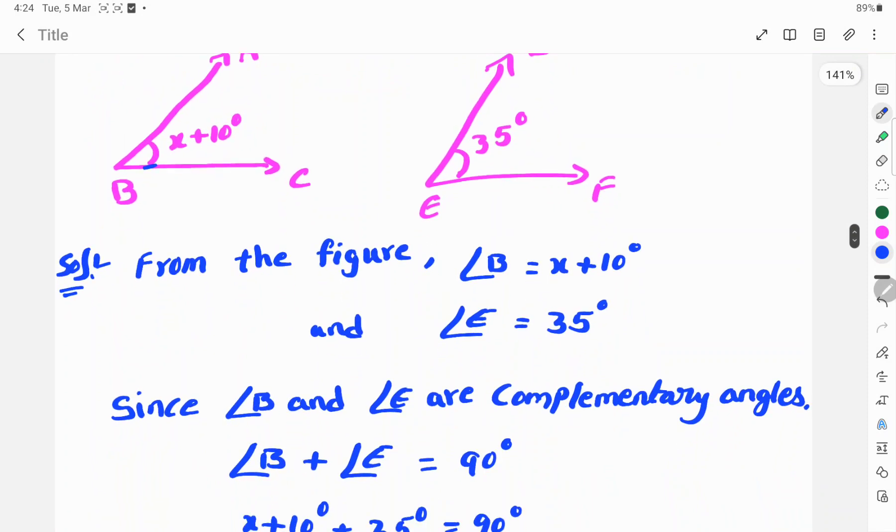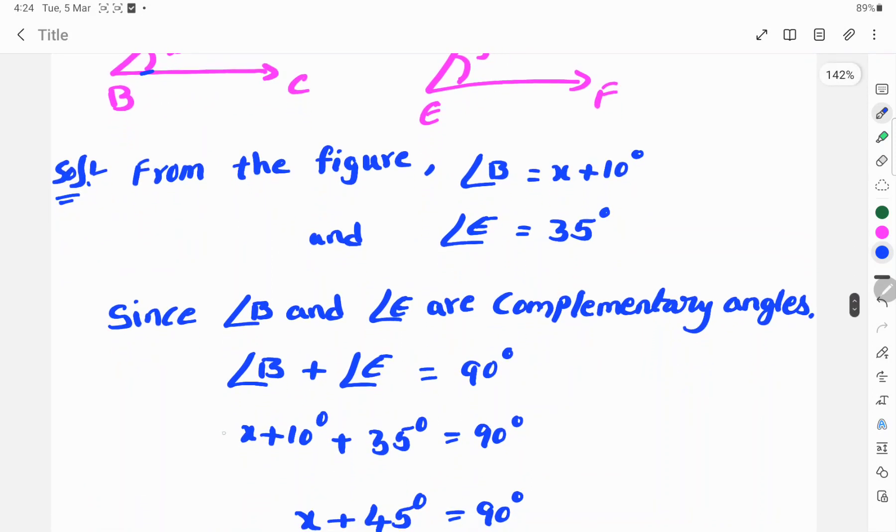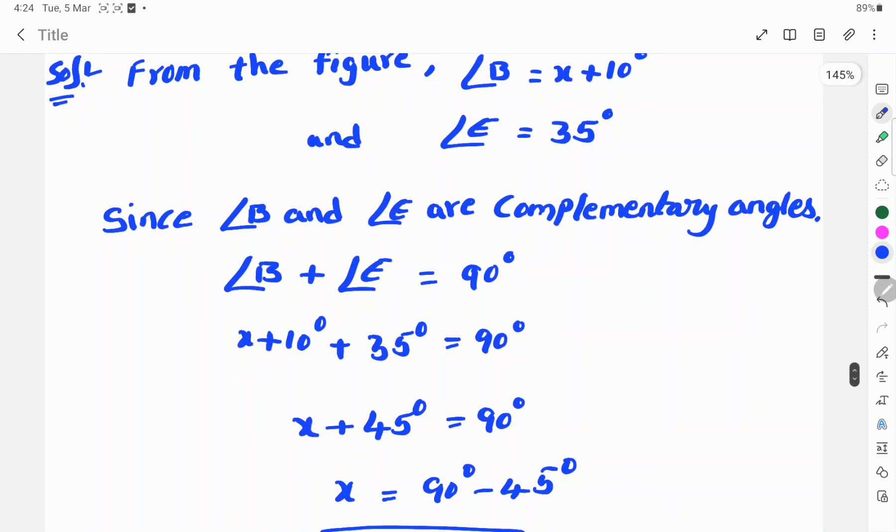Since angle B and angle E are complementary angles, angle B plus angle E equals 90 degrees, because complementary angles means the sum of two angles is 90 degrees.